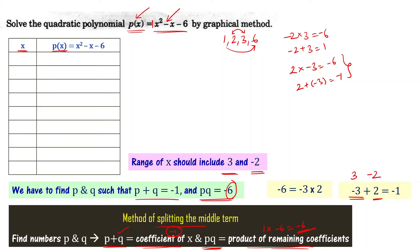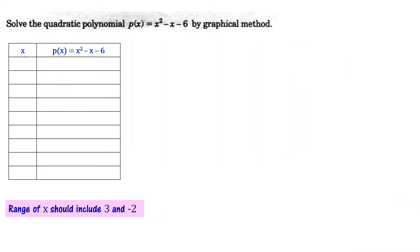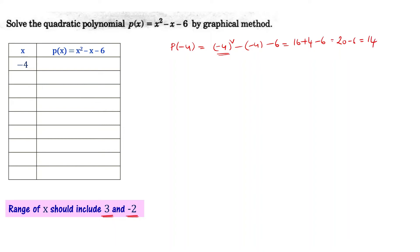Since -2 must be included, we start with a number smaller than -2, so I will start with x = -4. P(-4) = (-4)² - (-4) - 6 = 16 + 4 - 6 = 14. For x = -3: P(-3) = (-3)² - (-3) - 6 = 9 + 3 - 6 = 6.